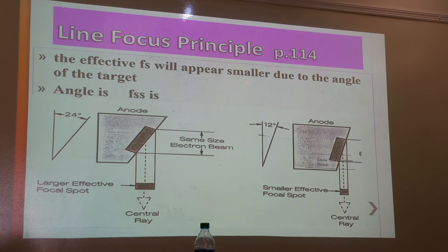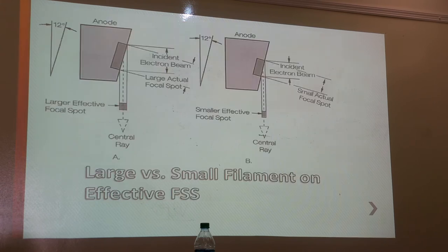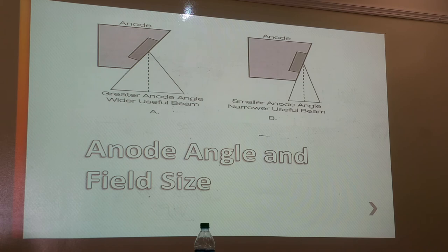The effective focal spot appears smaller due to the angle of the target or anode. If the angle decreases, the effective focal spot also decreases. Using the larger filament gives a larger actual focal spot and therefore a larger effective focal spot; using the smaller filament gives a smaller effective focal spot. This holds true for the same angle. Relationship questions on this will be on your test — make sure you review.